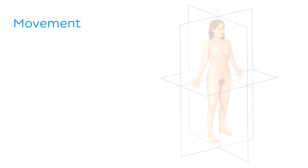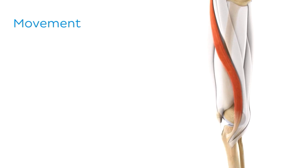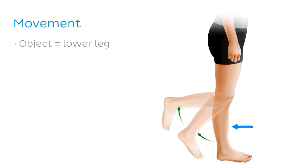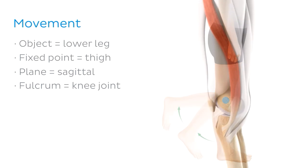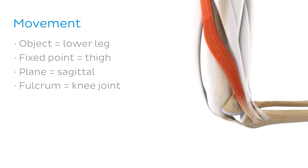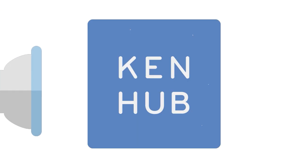Let's give you an example using the terms we've just described — we'll use the knee. If you stand on one leg and bend just your knee, your lower leg and foot move while your thigh stays stationary. The object is the lower leg, the fixed point is the thigh, and the plane through which the movement happens is the sagittal plane. The fulcrum, the point around which the movement happens, is the knee joint. The blue dot pulsing here is the axis around which the hinge movement of the knee occurs. All kinds of body movement can be described using these principles.